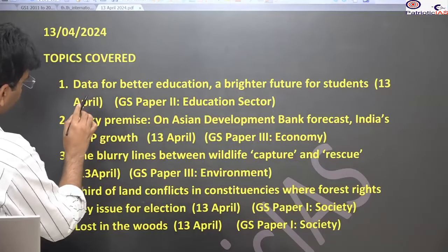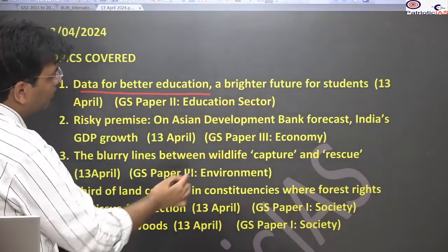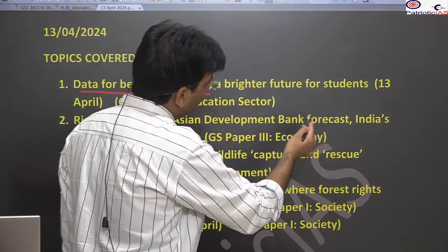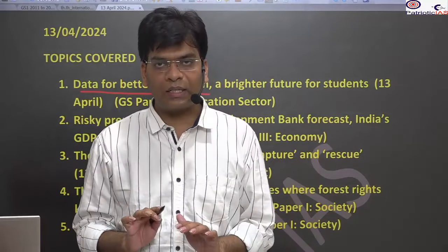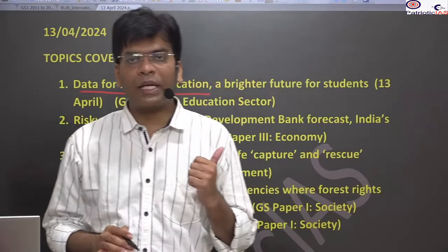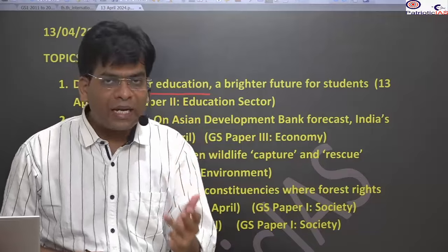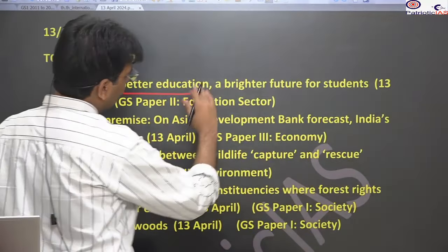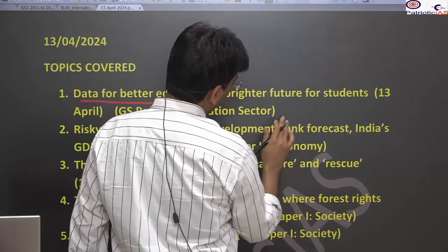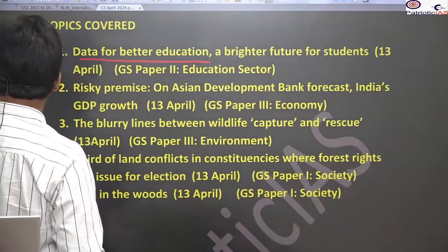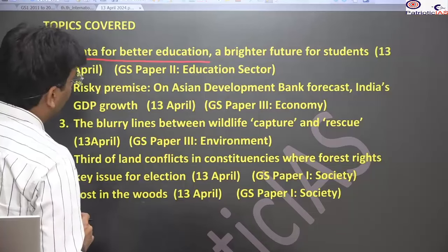The first topic is 'Data for Better Education.' Here it talks about the ASER report from Pratham NGO, and the data they are providing — not only to lament on things, but to make policy, strategy, plan, and design a better education policy so we can improve quality. It will be for mains GS Paper 2, covering the education sector, which is a crucial part UPSC asks questions from every year.